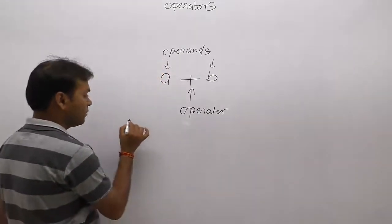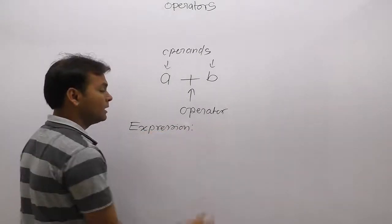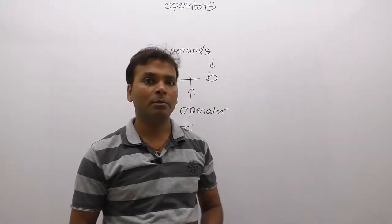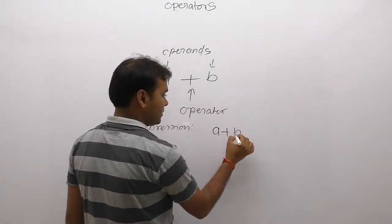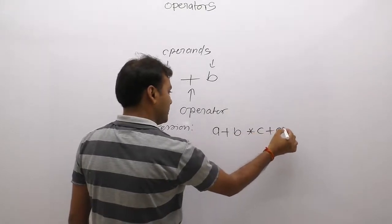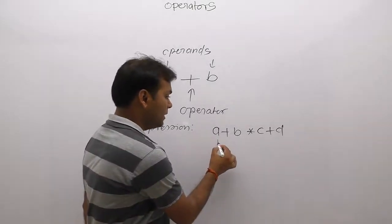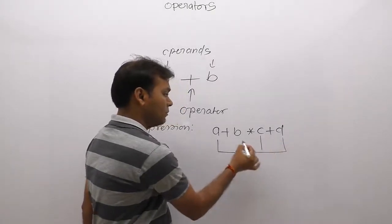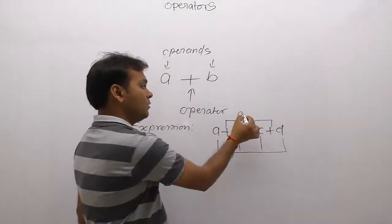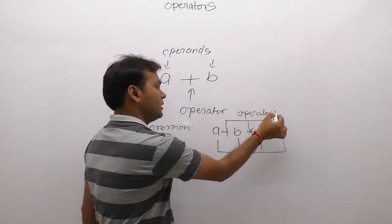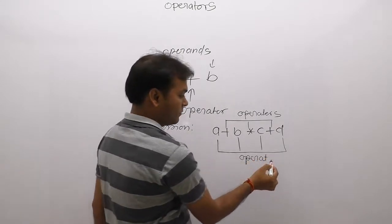Next, about expressions. With respect to operators, an important thing is expressions. What is meant by expression? An expression is a combination of operators and operands. Like a plus b multiplied by c plus d — something like this is called an expression. It is a combination or collection of operands and operators. For example there are four operands and three operators.